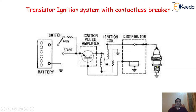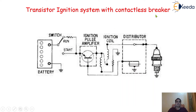The working principle is very much the same, and with the help of this particular diagram we can understand the transistor ignition system with contactless breaker. In the last video we discussed the transistorized system where a contact breaker was used, but in this particular diagram no contact breaker is available — this is the contactless breaker technique.